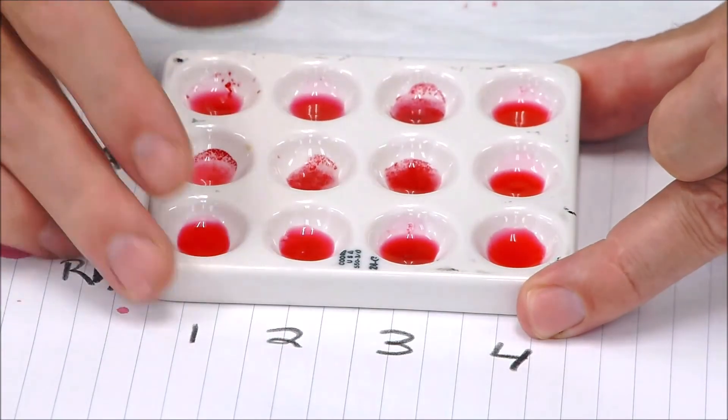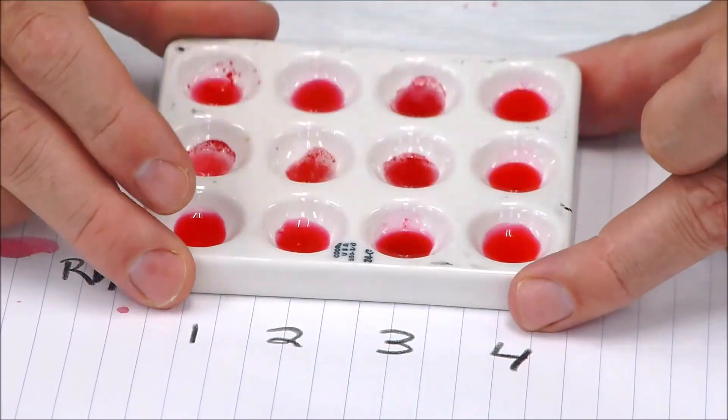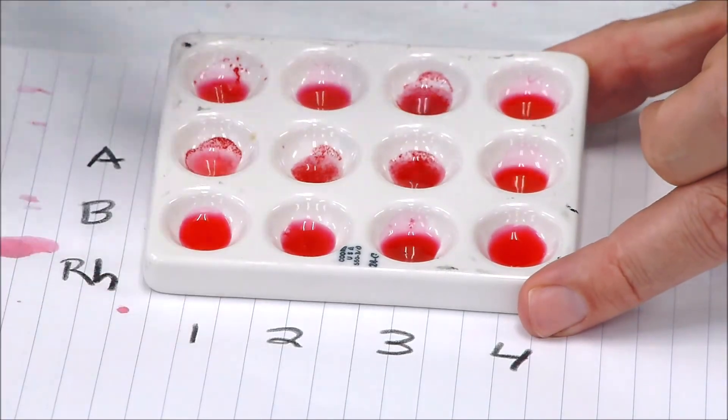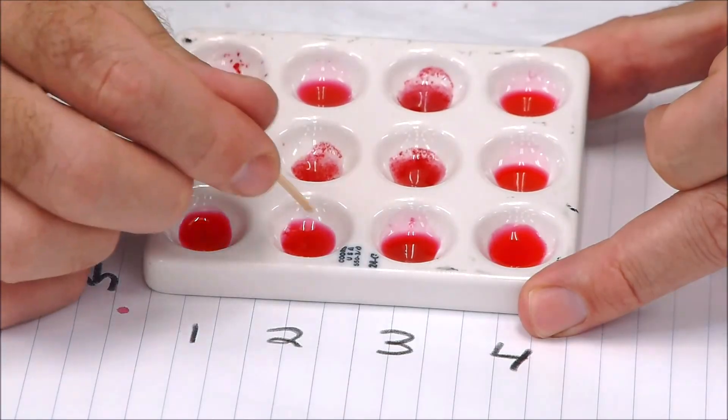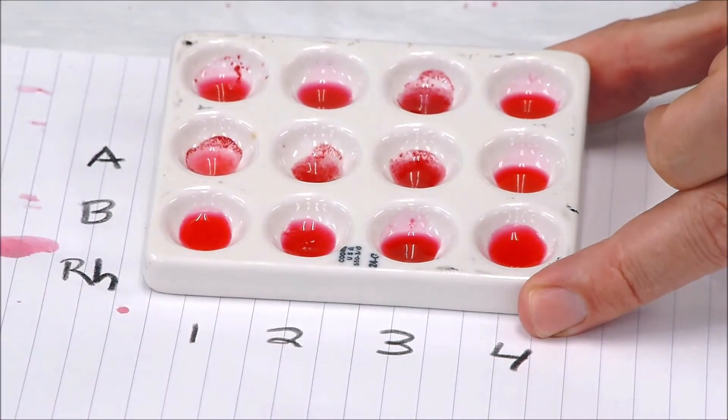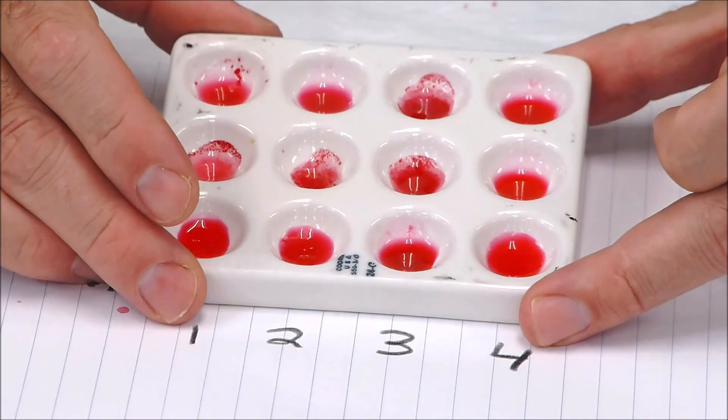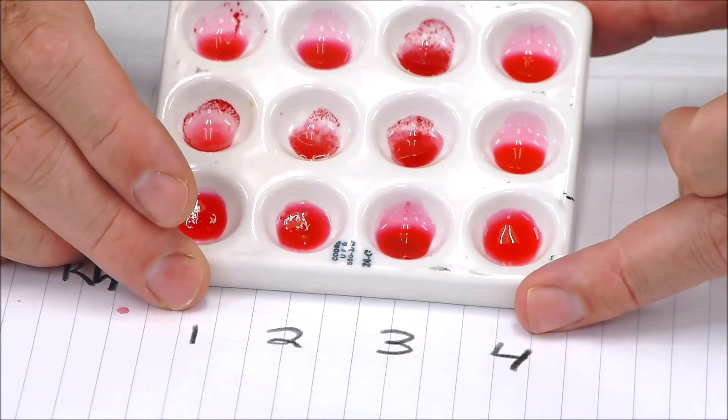Okay, for sample number two, you can take a look and see where do you see agglutination. And you may not be able to see the gelling going on, but I'll just tell you that the Rh down here has gelled, okay? So figure out what the sample is there.